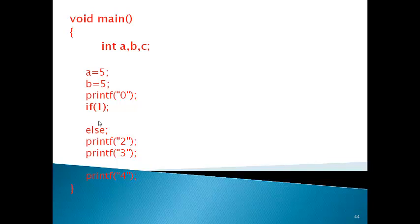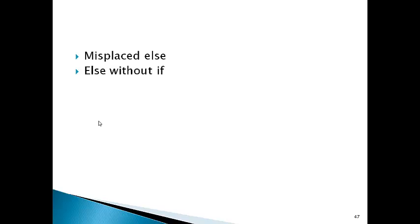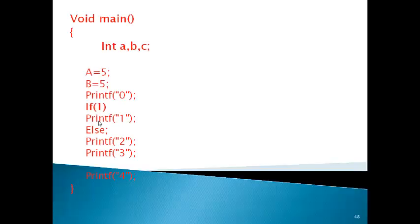Again, we have if with a statement terminator and else with a statement terminator, so neither if nor else has a real body. Output is 0, 2, 3, 4. But if the statement terminator causes else to appear without a proper if body before it, this creates a syntax error — 'misplaced else' or 'else without if.' So again, we have a question where else's body is a statement terminator, meaning 2, 3, 4 are independent.